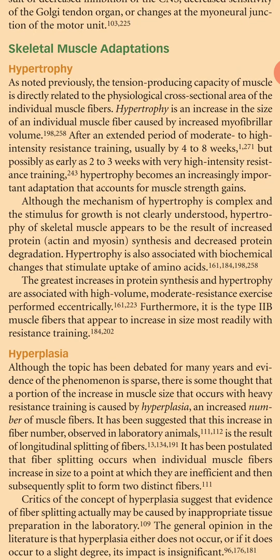Skeletal Muscle Adaptations — Hypertrophy. As noted previously, the tension-producing capacity of muscle is directly related to the physiological cross-sectional area of the individual muscle fibers. Hypertrophy is an increase in the size of an individual muscle fiber caused by increased myofibrillar volume. After an extended period of moderate to high intensity resistance training — usually about 4-8 weeks, but possibly as early as 2-3 weeks with very high intensity resistance training — hypertrophy becomes an increasingly important adaptation.